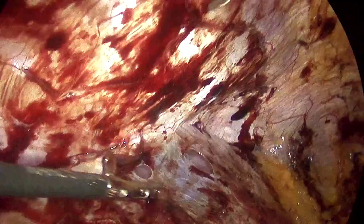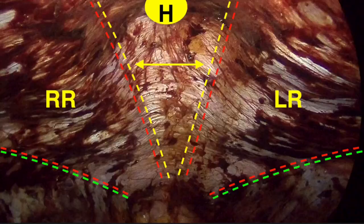You get to see the hernia defect, the diastasis, and the retrorectus space on both the left and right-hand sides. This was a very nice case to illustrate the non-inverting plication because this lady had quite a weakened midline.